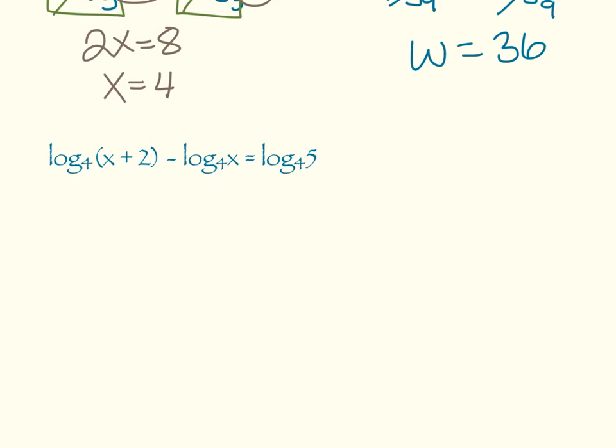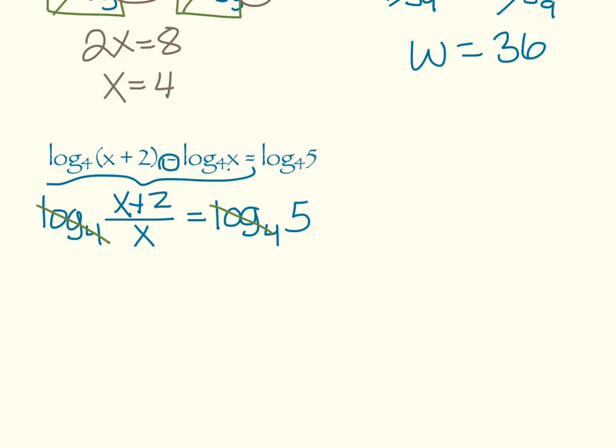Next one: log base 4 of x plus 2 minus log base 4 of x equals log base 4 of 5. We are going to condense these two together. So we want log base 4, and it's a minus. So we're going to have x plus 2 as our numerator and x as our denominator equals log base 4 of 5. Now that we've gotten the logs alone, they can go away. And so I'm going to multiply both sides by x: x plus 2 equals 5x. Combine like terms, 2 equals 4x, x equals 1 half.